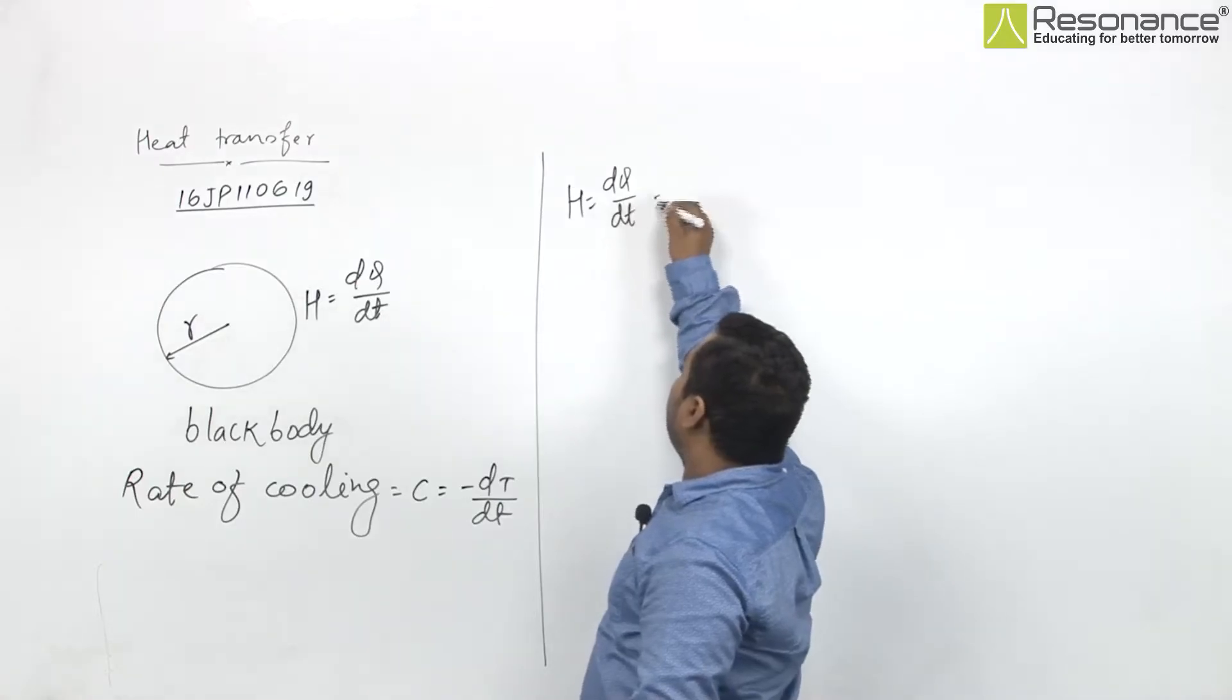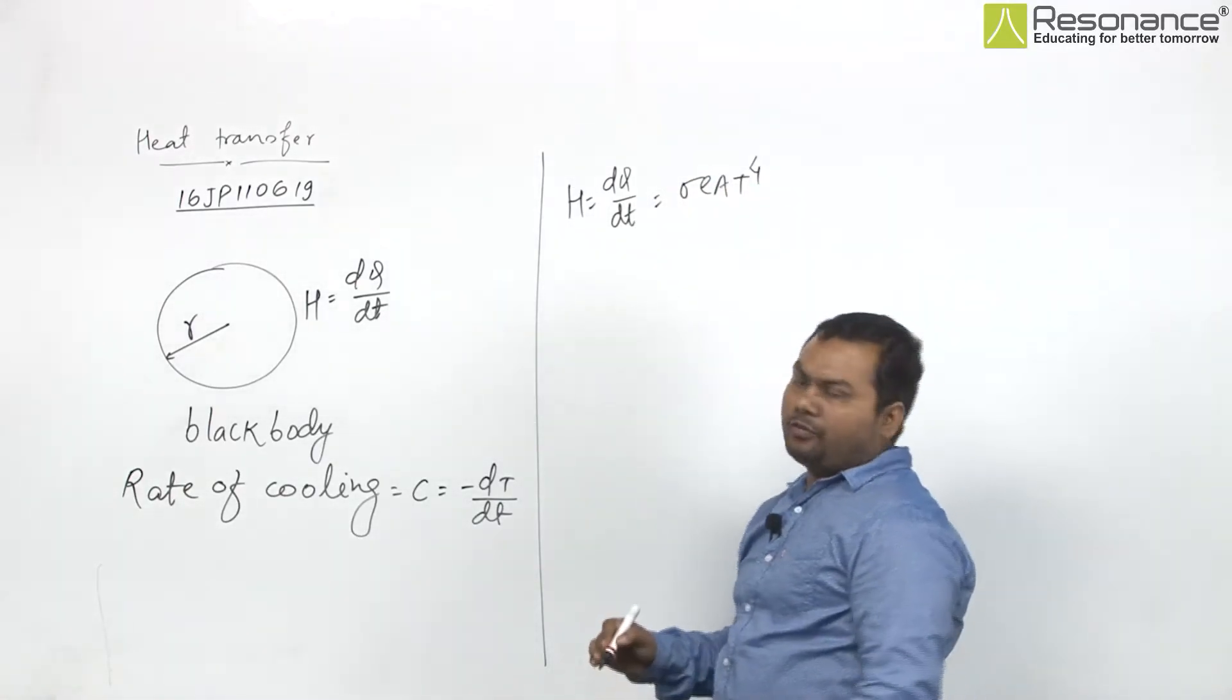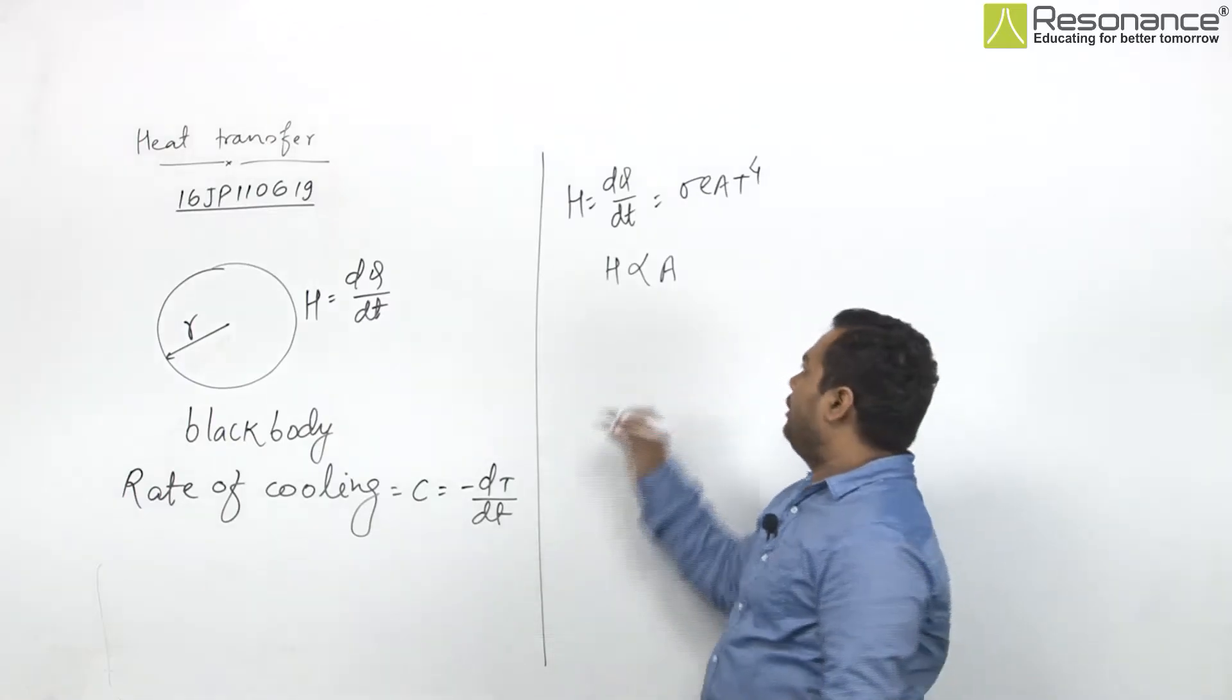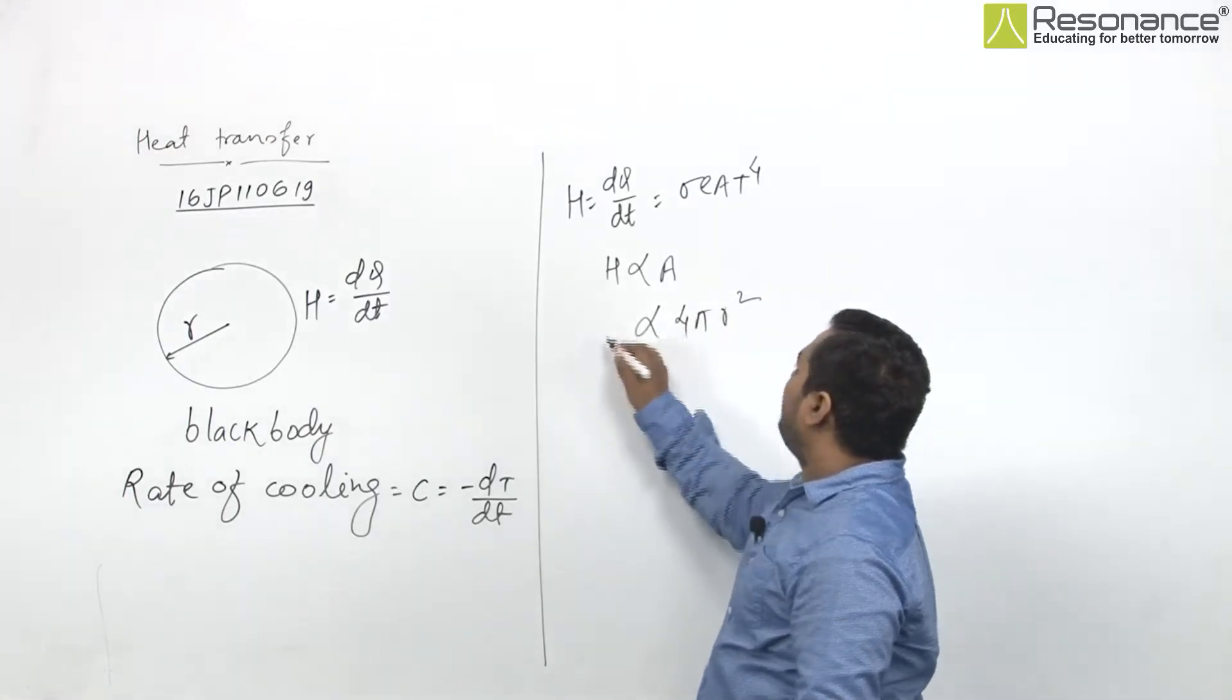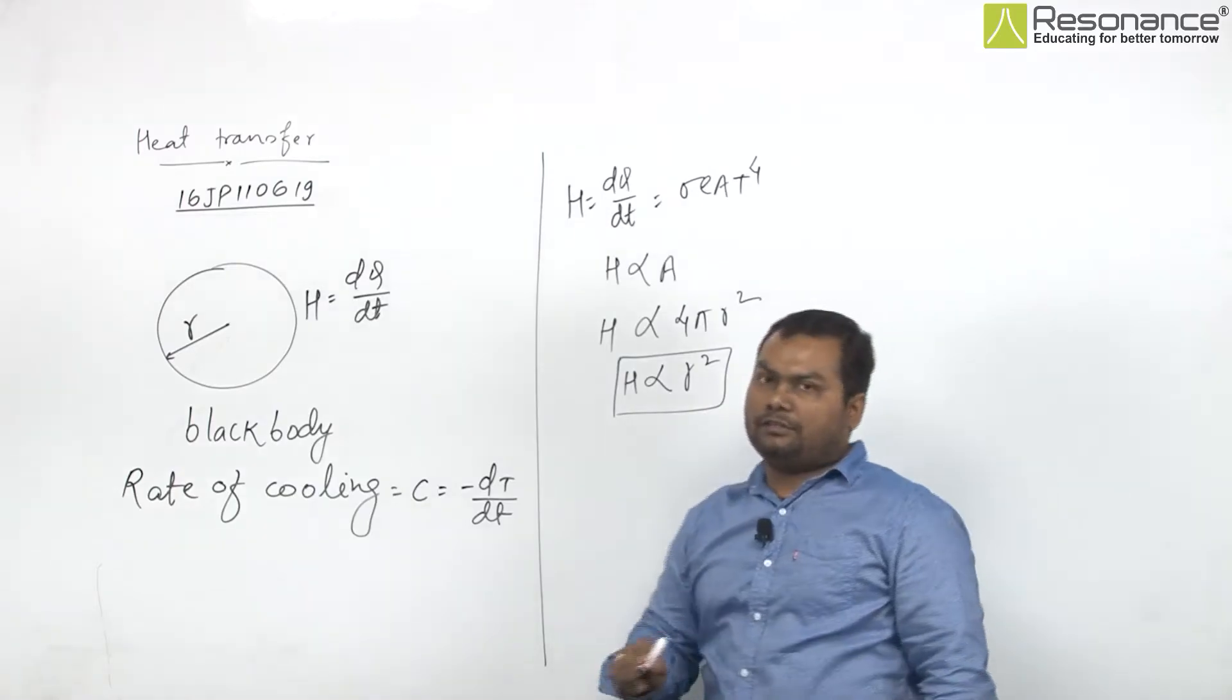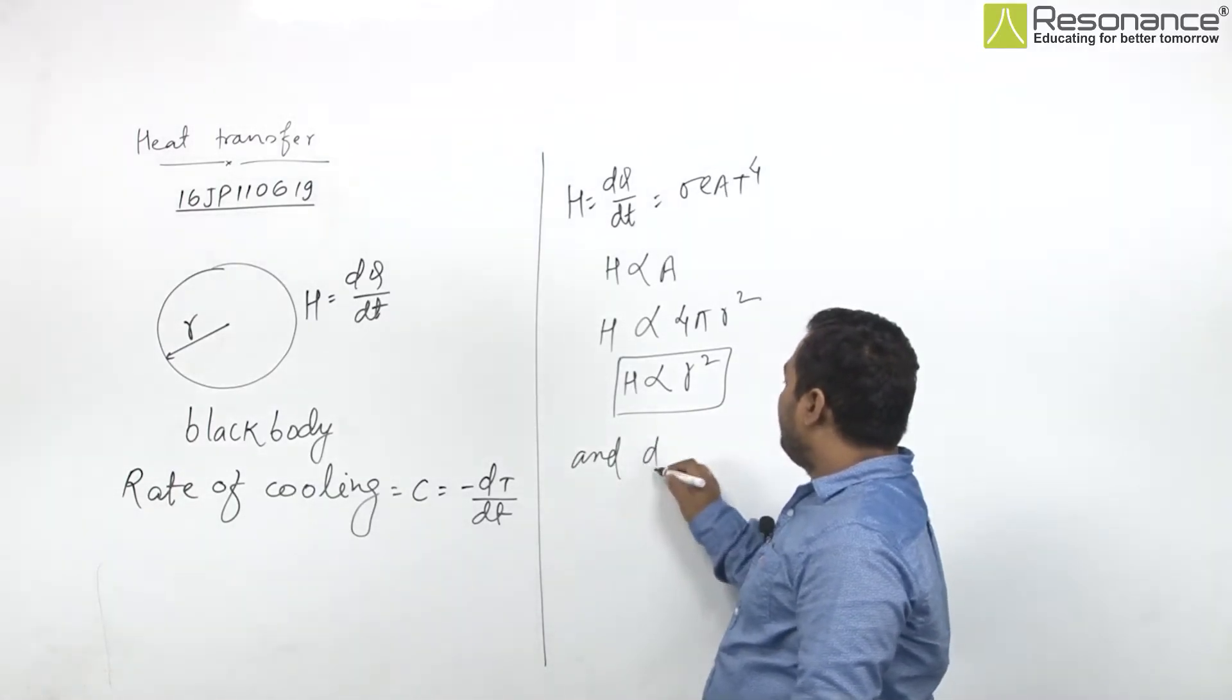You see H, which is dQ upon dT, is sigma E A T to the power 4. H is proportional to area A, and area is what? Surface area 4 pi R squared. So H will be proportional to R squared.